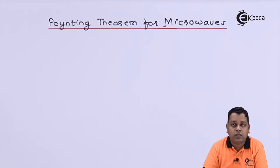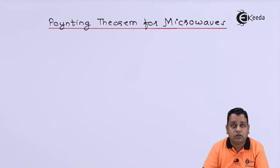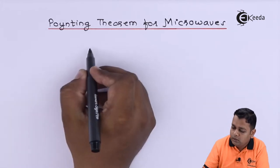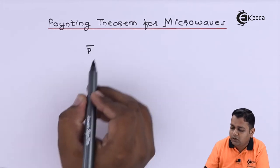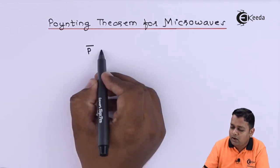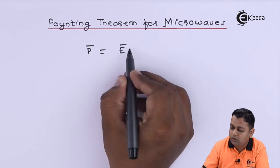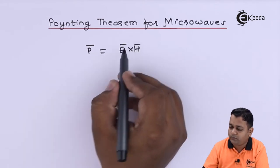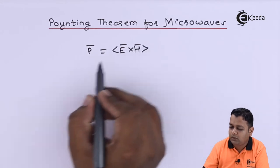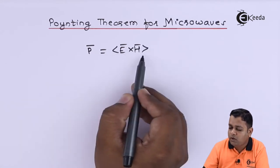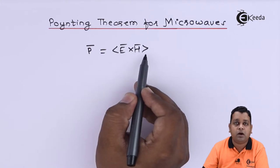As we have the background of Poynting theorem for electromagnetic wave from electromagnetic field theory, the Poynting theorem gives you information regarding the Poynting vector P-bar, which is denoted by P. As it is a vector, it is denoted P-bar and is made available by having a cross product of E-bar and H-bar. So basically the Poynting vector is actually the average of the cross product of E-bar and H-bar.